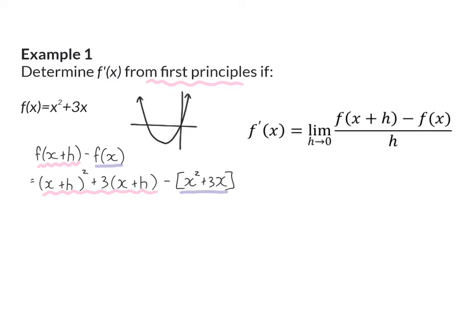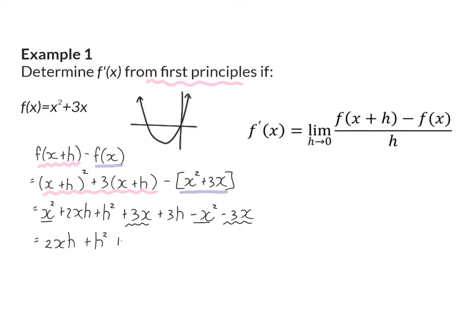From here it is algebraic simplification. I'm going to start off multiplying out the bracket squared, then I multiply in the 3 and I multiply in the minus. Next we can add up all the like terms and we'll end up with 2xh plus h squared plus 3h. And now we can substitute this into the complete formula.